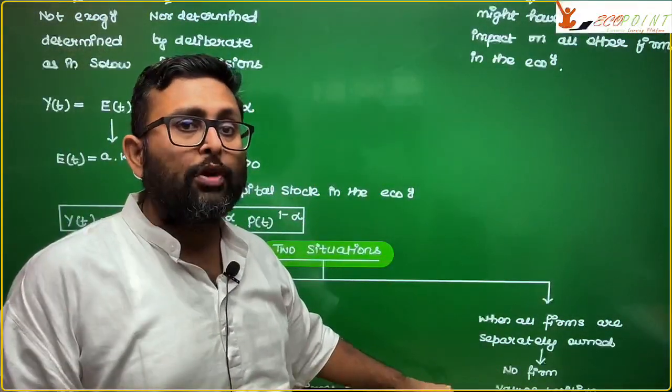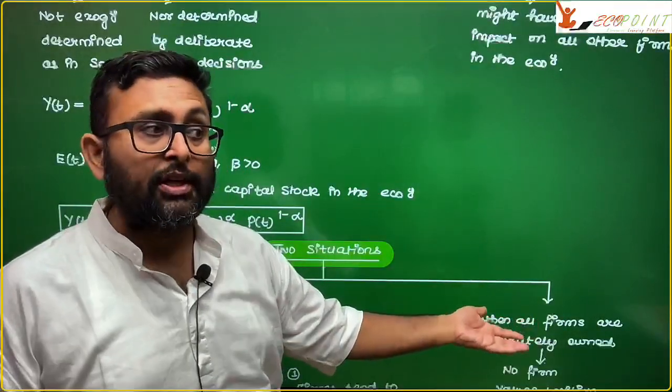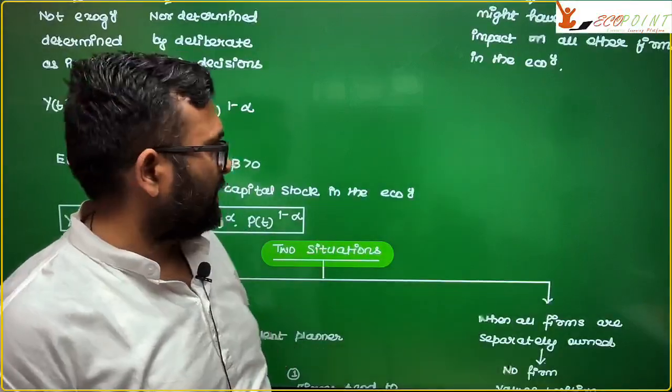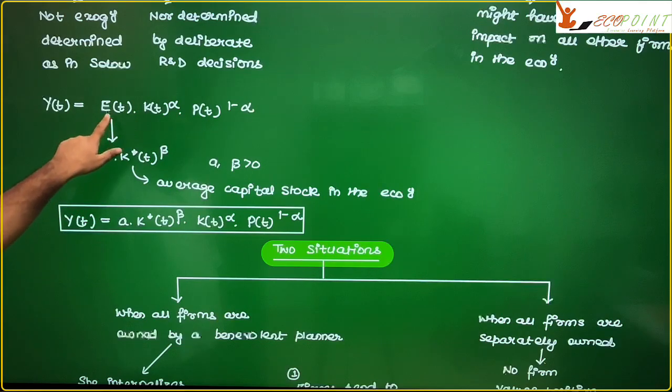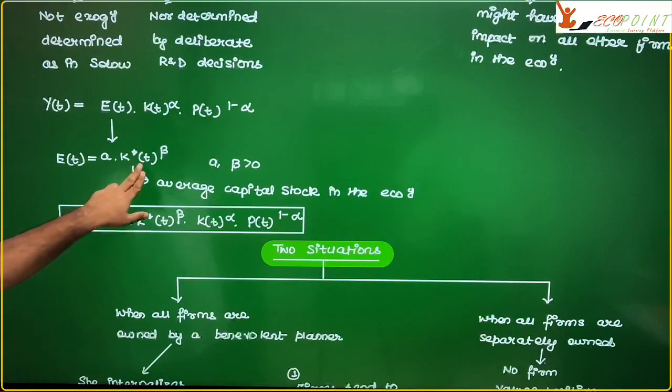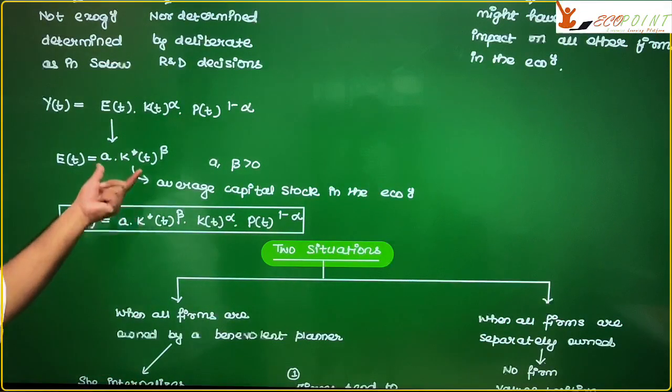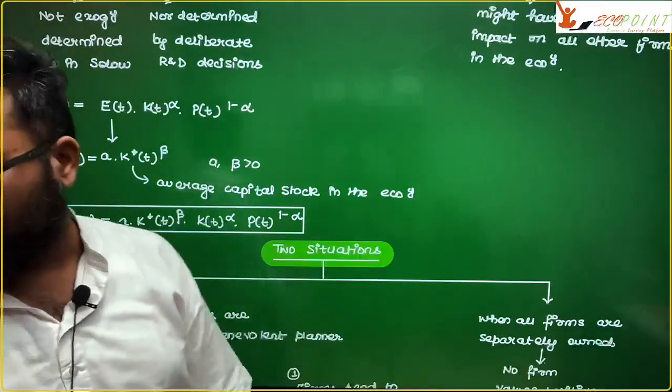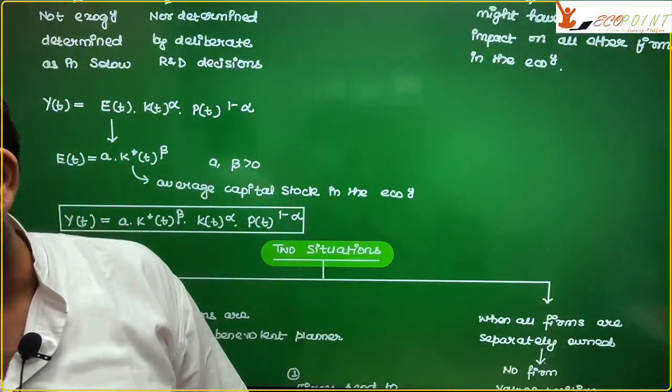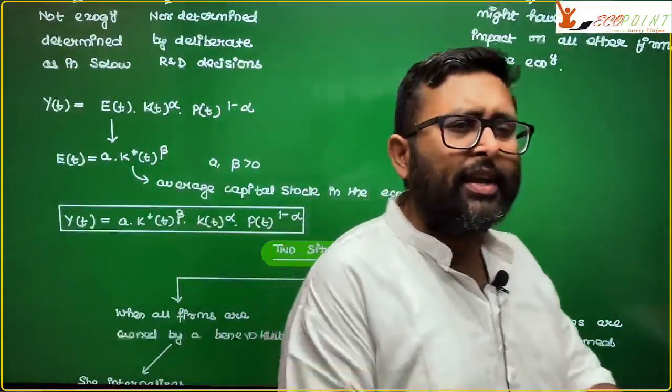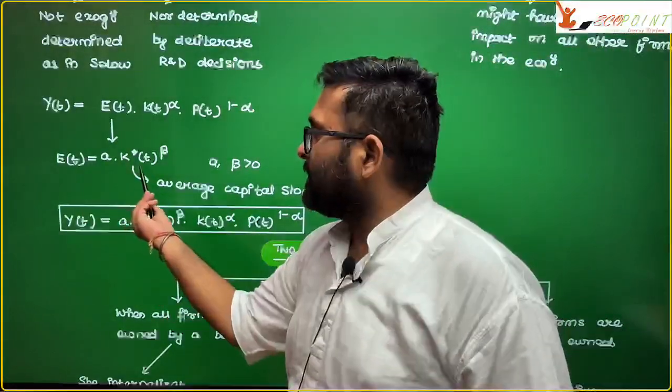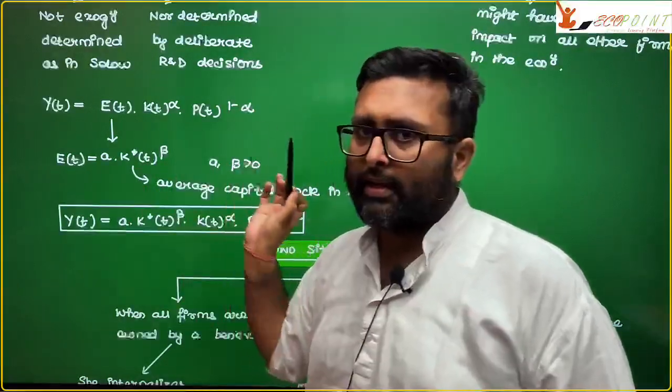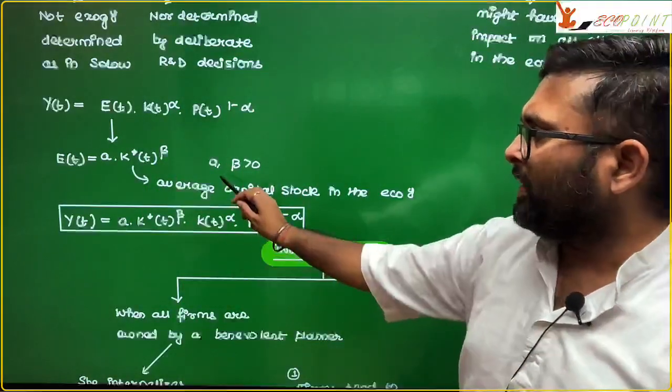The second thing is, I have a CRS production function for some reason. I tell you, we will have to compare it with economy-wide production function which is going to show increasing returns. I am going to write this e_t in this way. So, e_t is a into k star t to the power beta. What is this? What is k star? k star is average capital in the economy. On average, all firms have this level of capital stock.